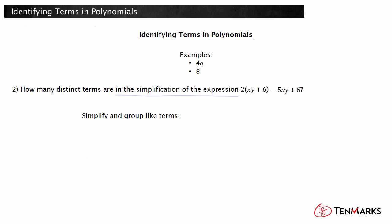The first step is to multiply 2 by each term inside the parentheses. As you see, 2xy and -5xy are two like terms. Also, 12 and 6 are two like terms. Therefore, they can be grouped together and simplified.